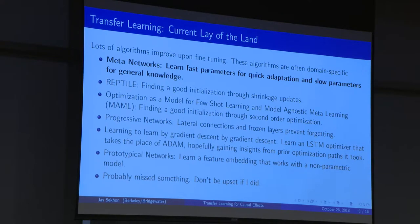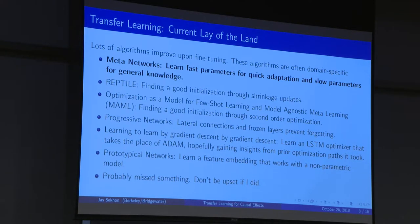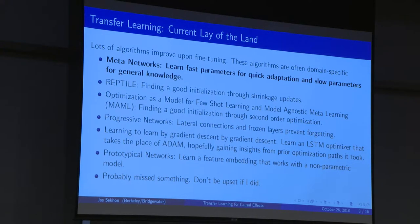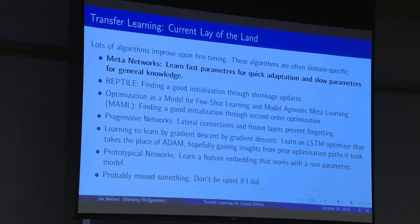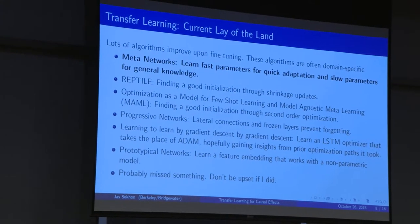We're going to use that idea in our framework in a very particular way. Reptile is a particular implementation from OpenAI for how you do that updating, which is clever and works well. There's also MAML from one of our co-authors Peter, which is another way of trying to come up with an adaptive learning approach. The hard problem becomes learning the slow things not too slow but not too fast, and the fast things not too fast and not too slow — that's the central difficulty.